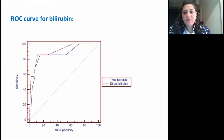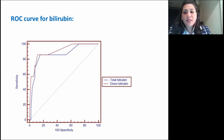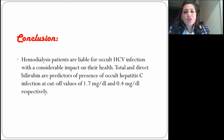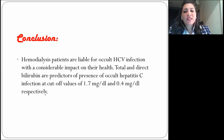Après analyse, nous avons constaté que la bilirubine totale et directe était un prédicteur de la présence d'hépatite C occulte chez les patients hémodialysés. Avec la courbe ROC, nous avons trouvé une valeur seuil de 1,7 mg/dL pour la bilirubine totale et de 0,4 mg/dL pour la bilirubine directe, correspondant aux valeurs limites permettant de prédire la présence d'hépatite C occulte chez les patients hémodialysés. En guise de conclusion, nous pensons que les patients hémodialysés peuvent contracter une infection occulte au virus de l'hépatite C ayant un impact sur leur santé.